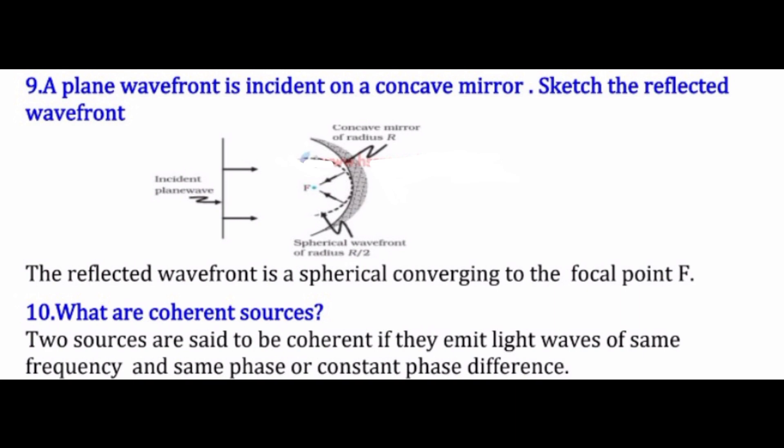The sources are said to be coherent if they emit light waves of same frequency and same phase or constant phase difference.